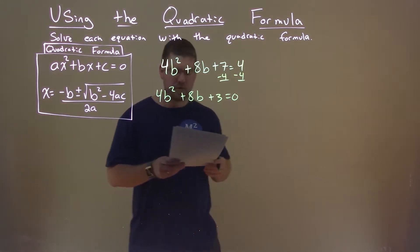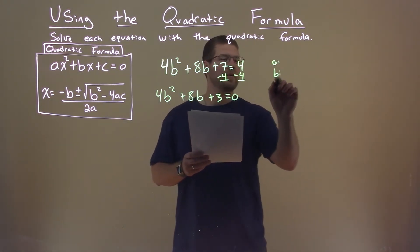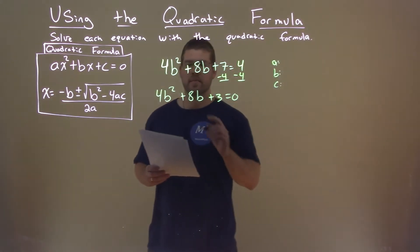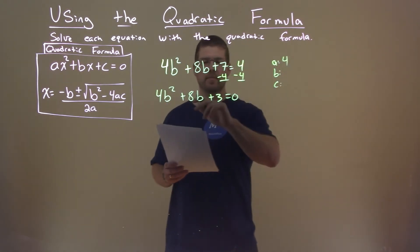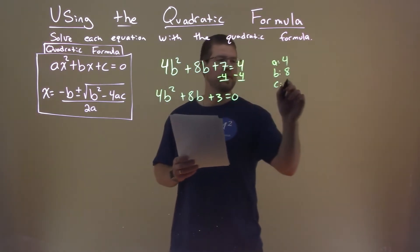Now that it's equal to 0, I need to find my a, my b value, and my c value. a value is 4, b value is 8, and c value is 3.